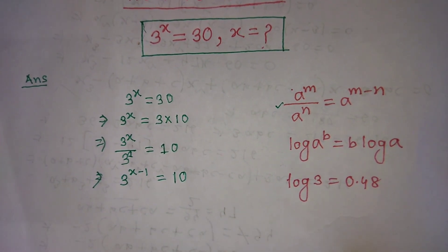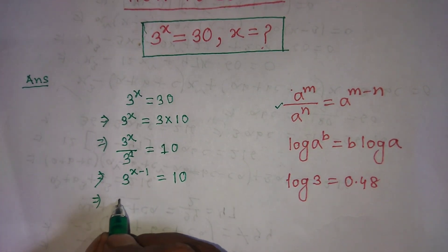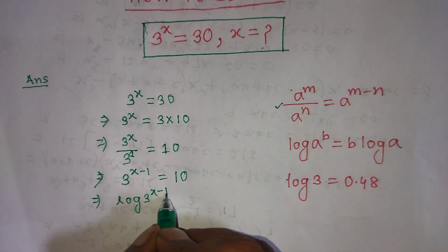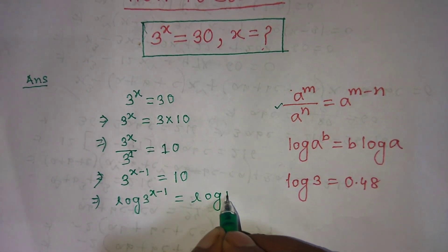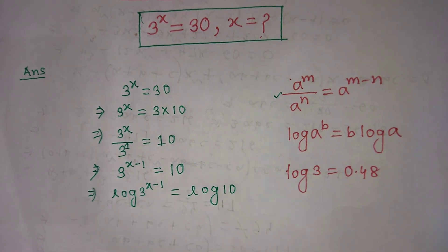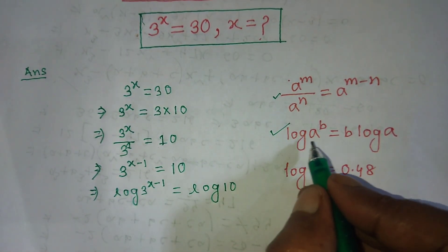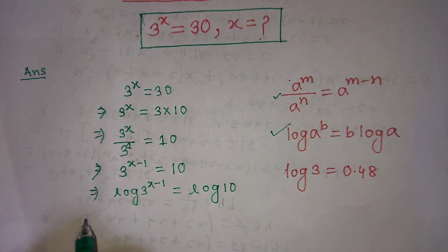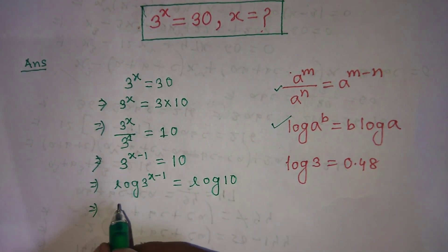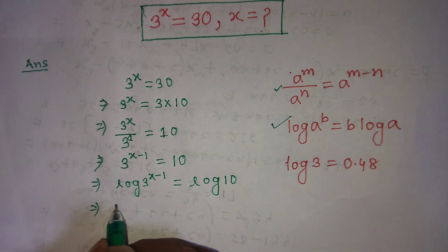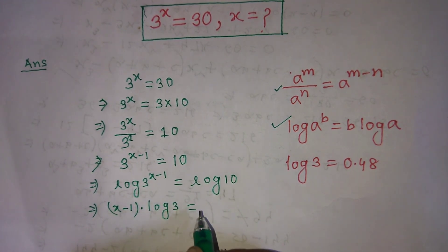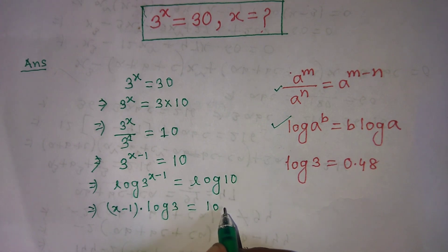To find the value of x, we have to take log on both sides. So we write: log of 3 to the power x minus 1 is equal to log 10. After that, we apply the formula: log of a to the power b is equal to b log of a. Applying this on the left hand side, we get x minus 1 into log 3 is equal to log 10.